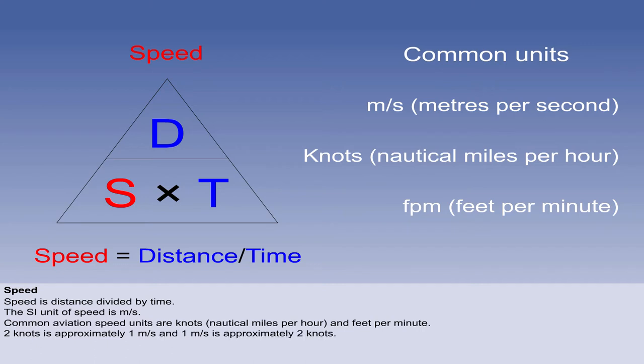Conversely, one metre per second is roughly two knots. So, if you were given a wind speed in metres per second, you would double it to get an approximate wind speed in knots. So, for example, a wind of 10 metres per second is approximately 20 knots.